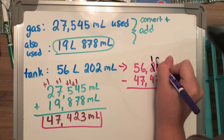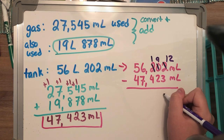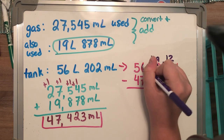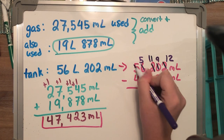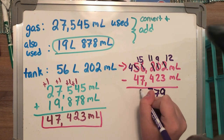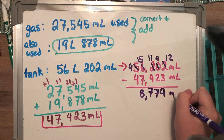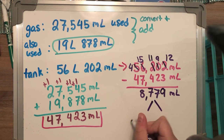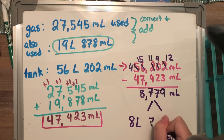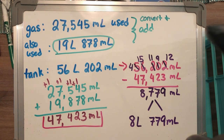After subtracting, the remaining gas in the tank is 8,779 milliliters. I can also break that down into smaller units: 8 liters and 779 milliliters. That wraps up our quick recap on how to add, subtract, and compare different metric units. Until the next video, bye guys!